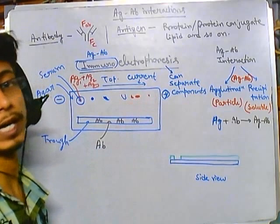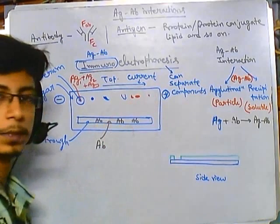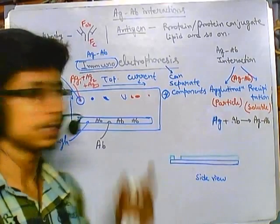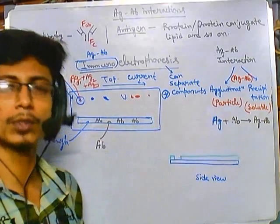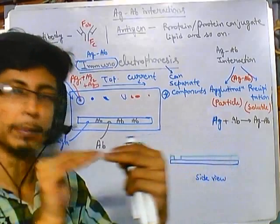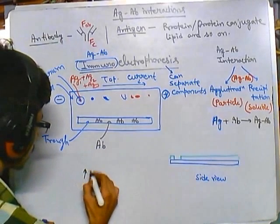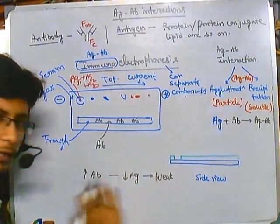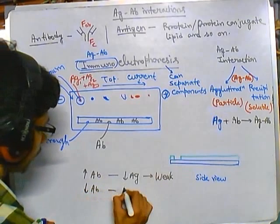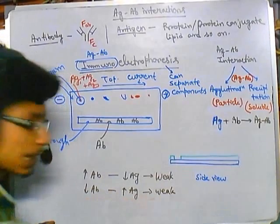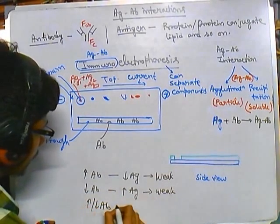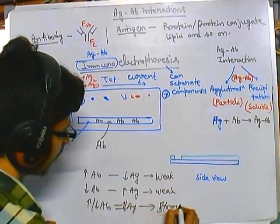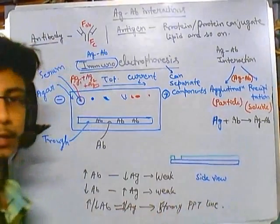After placing the antibody, we set this whole setup for overnight or 24-hour incubation. During this period, diffusion plays an important role in precipitation. Antigen and antibody diffuse through the small pores of the agar and can meet each other. If antibody concentration is much higher than antigen, or antigen is much higher than antibody, the precipitin line is weak. But if antigen and antibody concentrations are equal, we get a strong precipitin line.